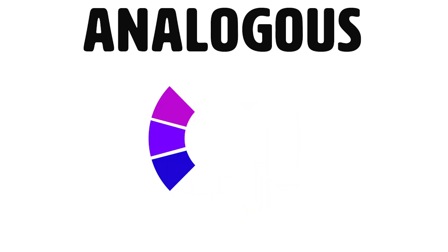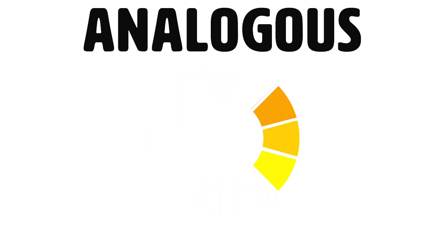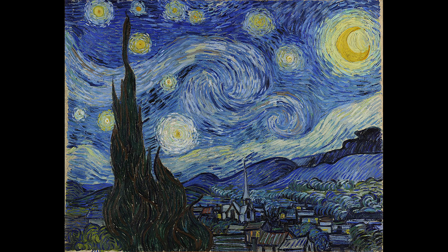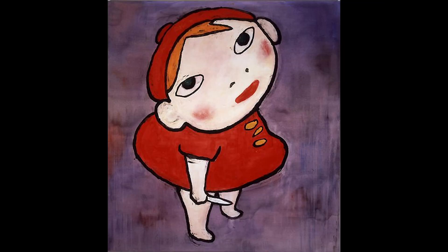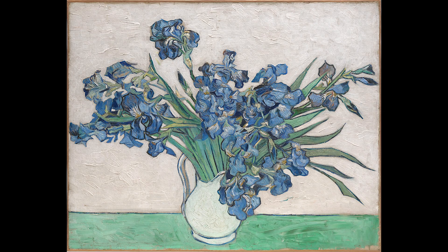Analogous colors are colors that are next to each other on the color wheel. For example, yellow, green, and blue, or purple, red, and orange. Since analogous colors are neighbors on the color wheel, they get along. This makes an image using analogous colors feel unified and calm, but can sometimes make the image boring or uninteresting.